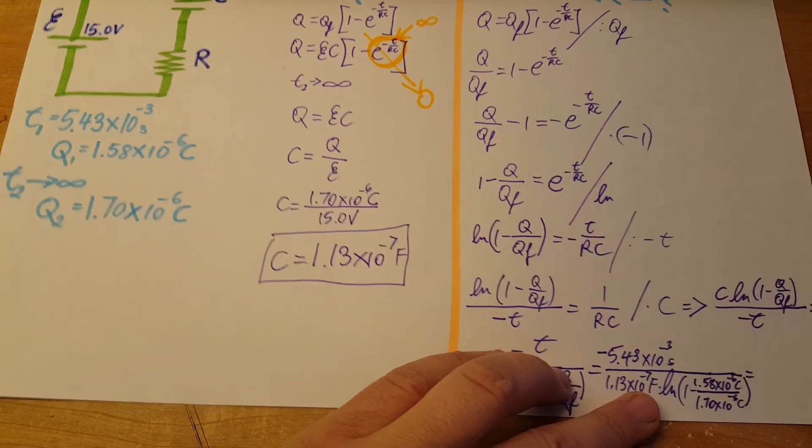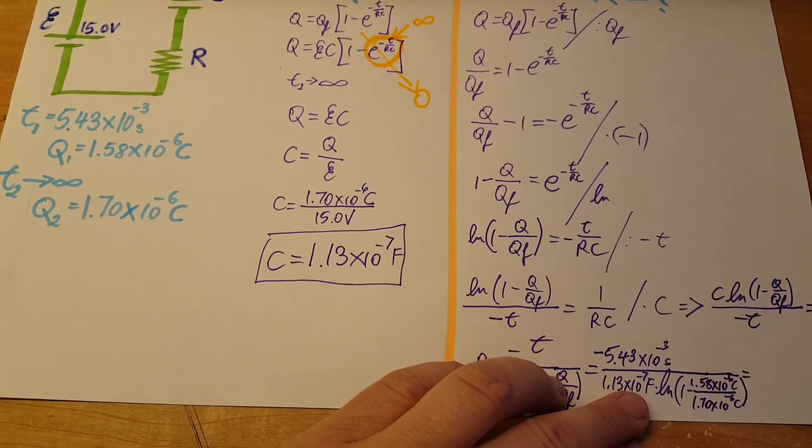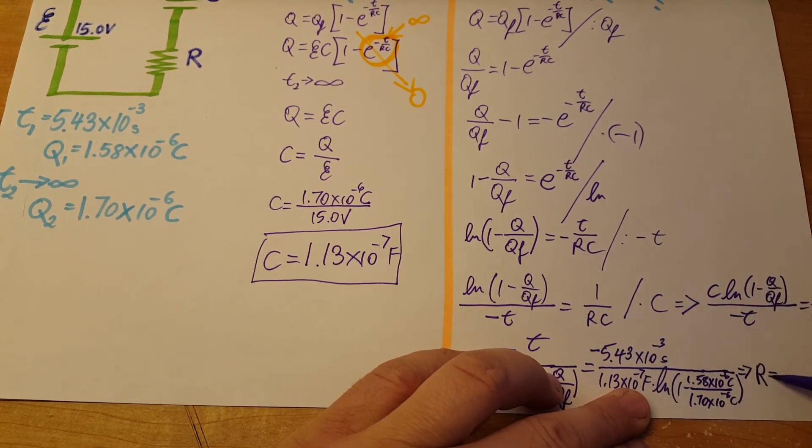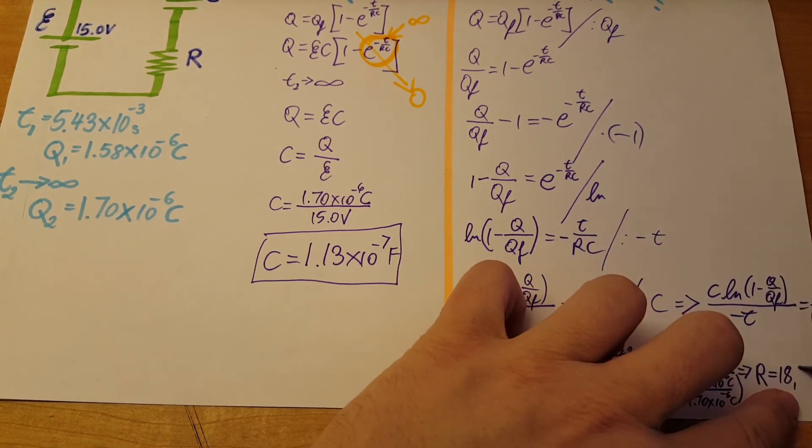And if we calculate this out, we're gonna have our R equals 18,100 ohms.